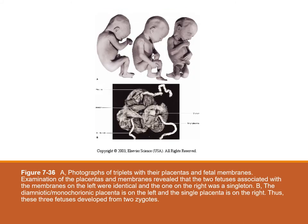These photographs show triplets with their placenta and corresponding fetal membranes. By examining the fetal membranes and placenta, we can better understand what happened during embryonic development. It was revealed that two of the fetuses — associated with the membranes on the left — were actually identical, while the one on the right is a singleton. Figure B shows the diamniotic monochorionic placenta on the left and the single placenta on the right, meaning these three fetuses developed from two different zygotes.